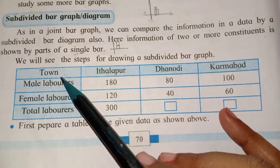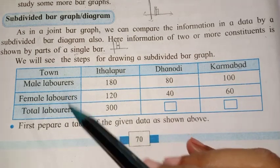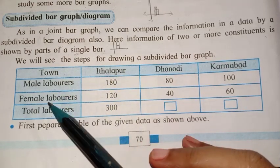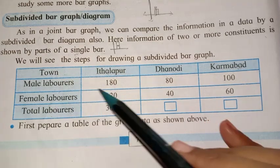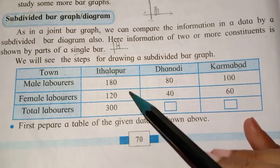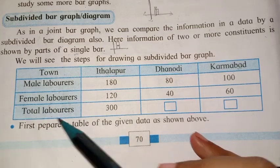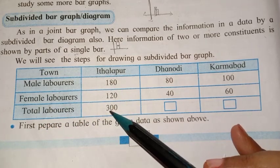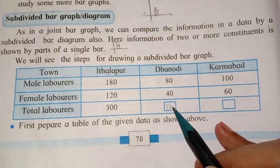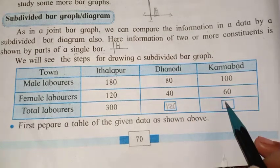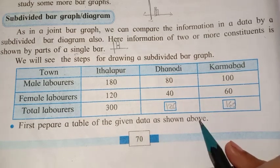Which information is given here? Three towns, and in these three towns, the number of male labourers and female labourers are given. What we have to do here is first add both the labourers — that is, write the total labourers. So 180 plus 120 is 300. Then 80 plus 40 is 120. Then 100 plus 60 is 160. First, prepare a table of the given data as shown.